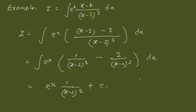For the next example: integral of e^x·(x−4)/(x−2)³. Since the denominator has power three, the first part should have power two. We rewrite x−4 as (x−2)−2, separating the integrand into 1/(x−2)² and −2/(x−2)³. These match the form f(x) + f'(x) where f(x) = 1/(x−2)², which you can verify. So the answer is e^x·[1/(x−2)²] + C.